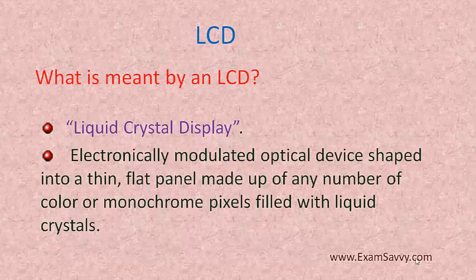LCD is nothing but a liquid crystal display. LCD is a static panel which is made up of a modulated optical device. It may be of any color — it may be monochrome, black and white, or colors with red, green, and blue. So LCD makes use of liquid crystals.